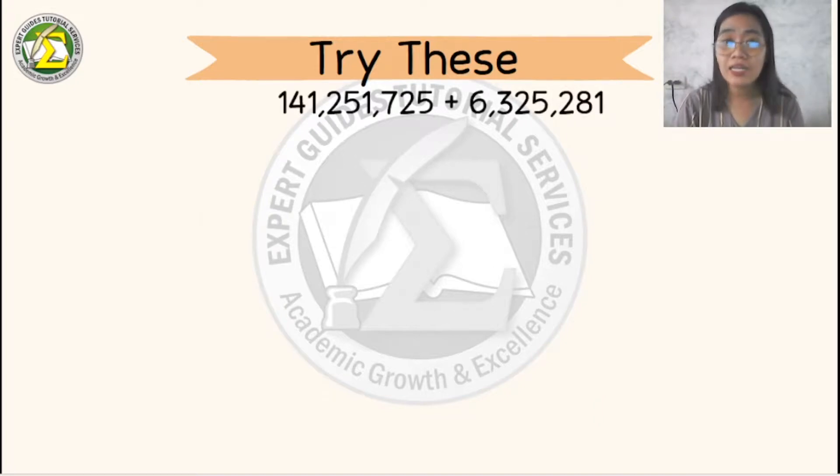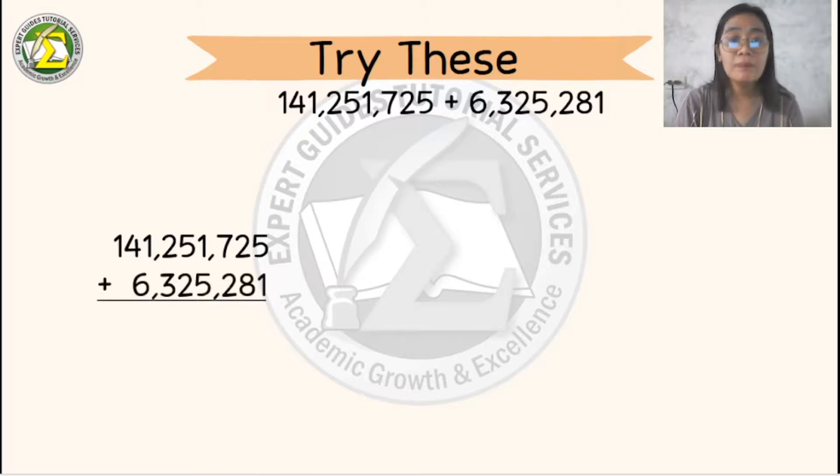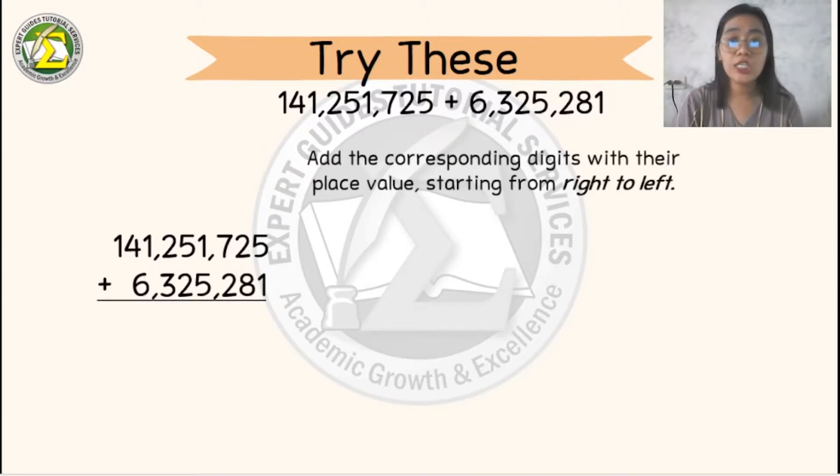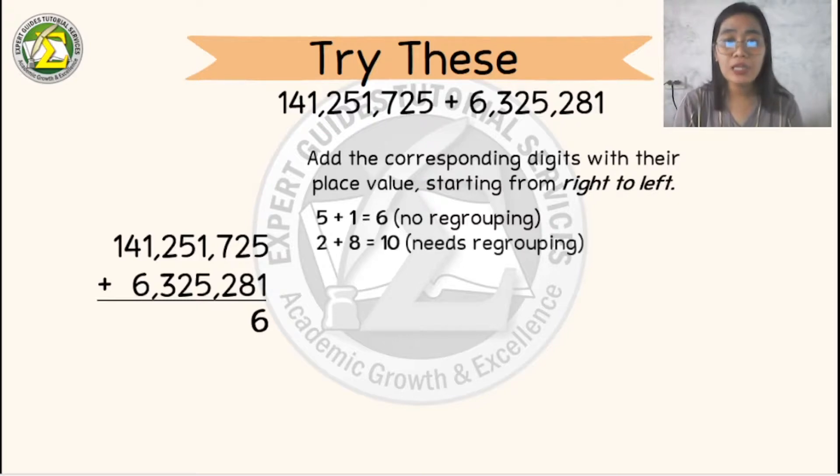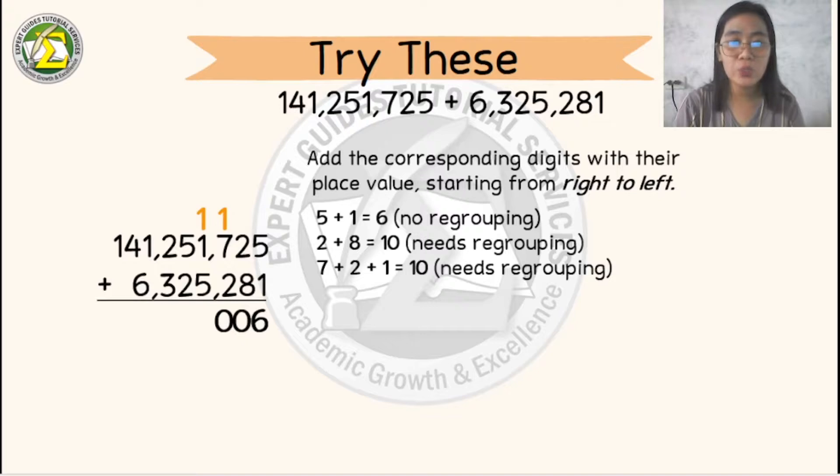So I want you to try this. You can pause this and try your answer on your answer sheet. So let's answer 141,251,725 plus 6,325,281. Let's add the corresponding digits with their place values starting from right to left. So 5 plus 1 will become 6, 2 plus 8 will become 10. Let's regroup. 7 plus 2 will become 9 plus 1, 10. Let's regroup again. 1 plus 5 is 6. Don't forget to add 1 to the result. So it will become 7.